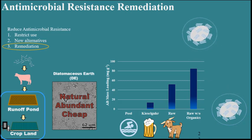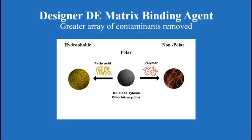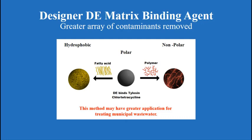The process works really well for positively charged antimicrobials but not as well for antimicrobials without much charge. The next step the lab is working on is to make designer vitreous matrix binding agents with affiliated functional groups that can be mixed with raw diatomaceous earth to also bind compounds with fatty acids, or using some kind of polymer. This would also have greater application for treating municipal wastewaters, including hormones and a wider variety of antimicrobials.